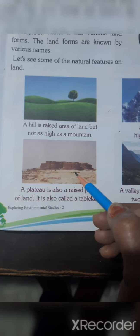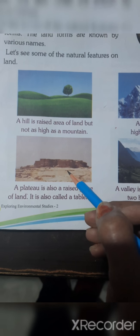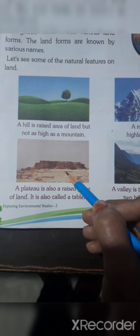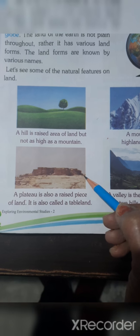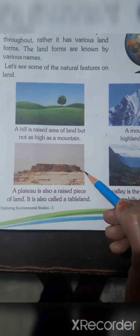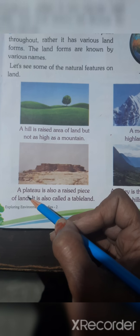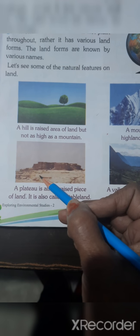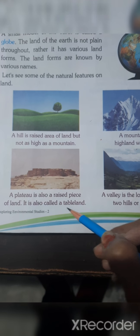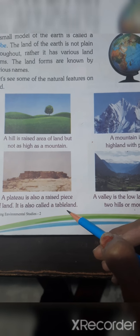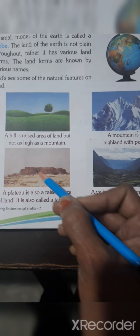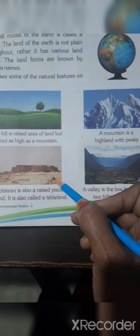Now look at this picture. This is a plateau. It is also a raised piece of land, on height. It is also called a tableland — it is like a table land.